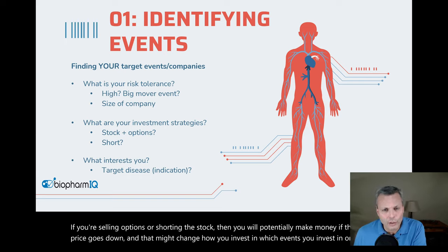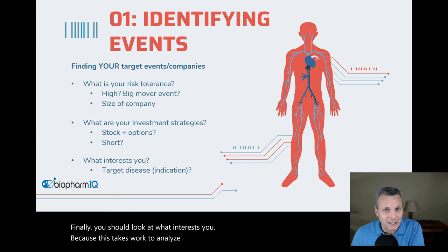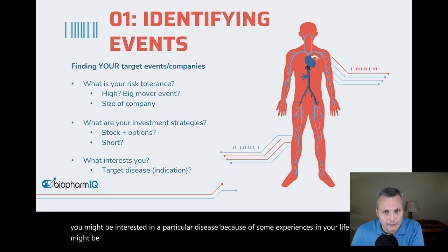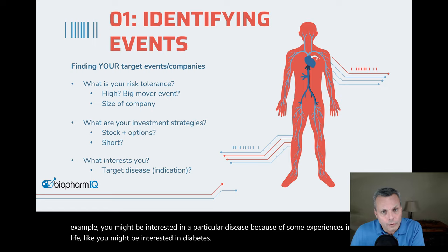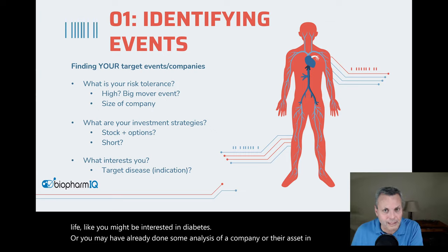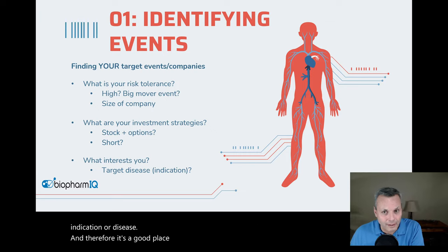Finally, you should look at what interests you, because it takes work to analyze these events and it should be interesting to you. For example, you might be interested in a particular disease because of some experiences in your life, like diabetes. Or you may have already done some analysis of a company or their asset in a particular indication, and therefore it's a good place to find another asset because you're already familiar with that disease state.